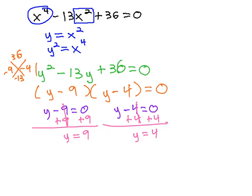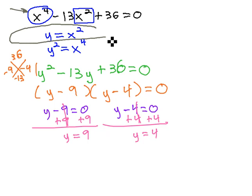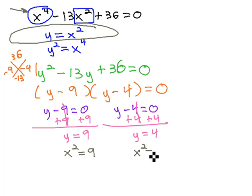We need to be careful here because we're not done yet. We're not done because this equation wasn't interested in knowing what y equals — we made y up. This equation wants to know what x equals. We said y is equal to x squared, so let's substitute back. We replace our y's in our solutions with x squared: y gets replaced with x squared equals 9, and y gets replaced with x squared equals 4.